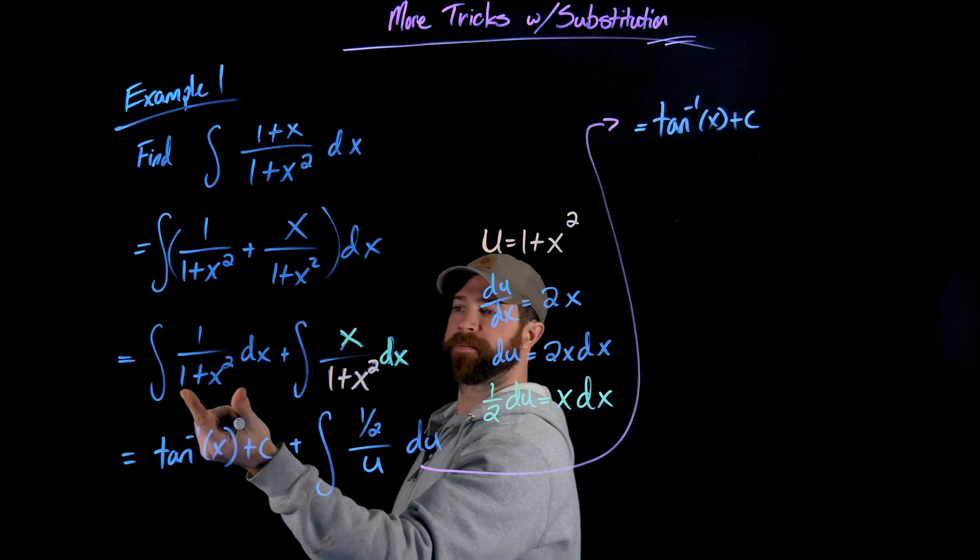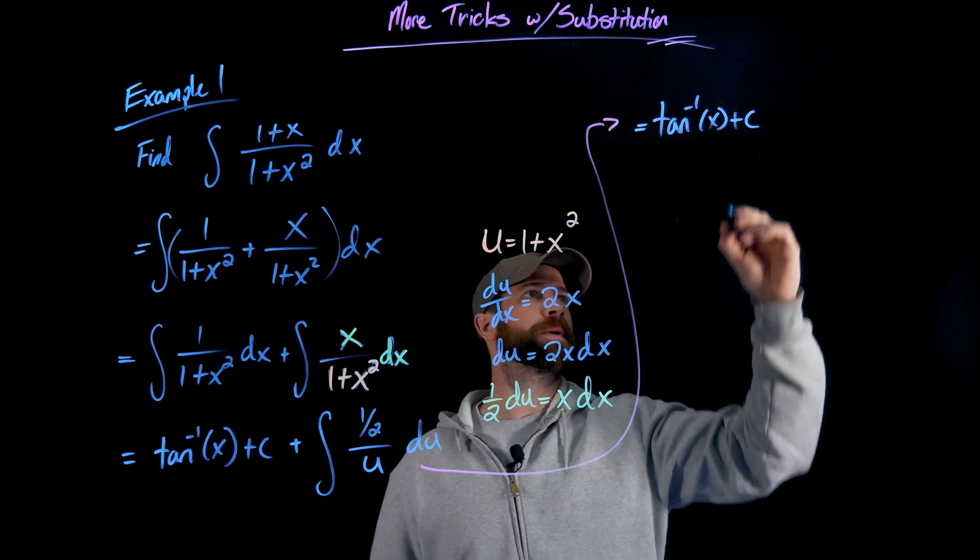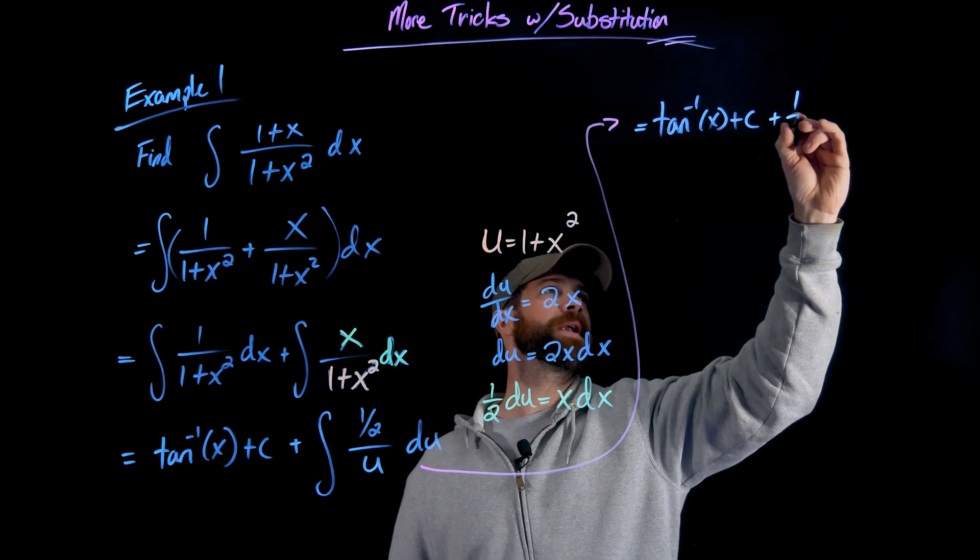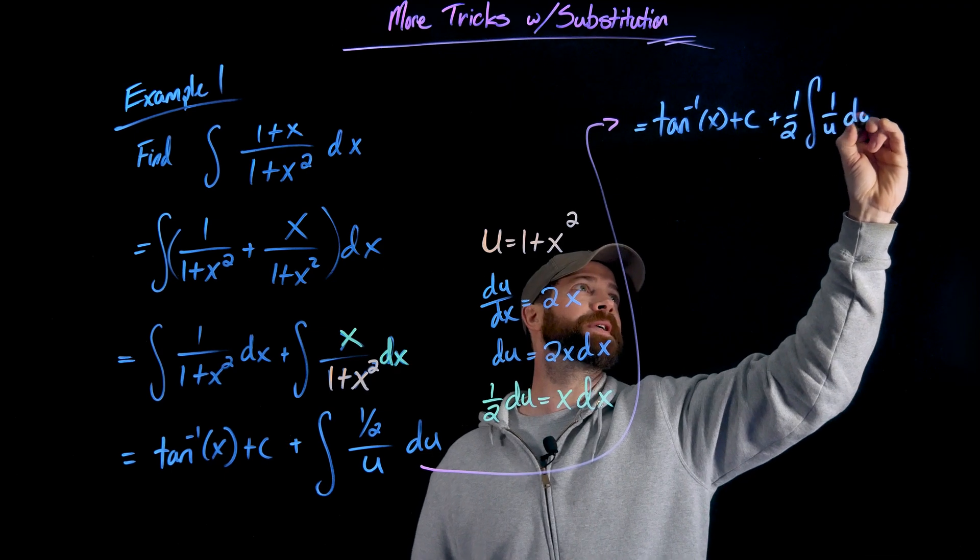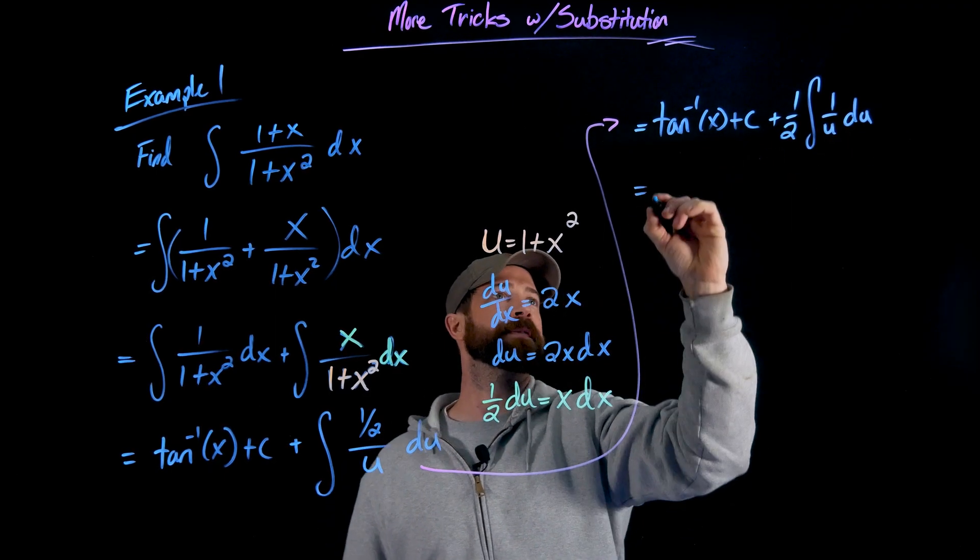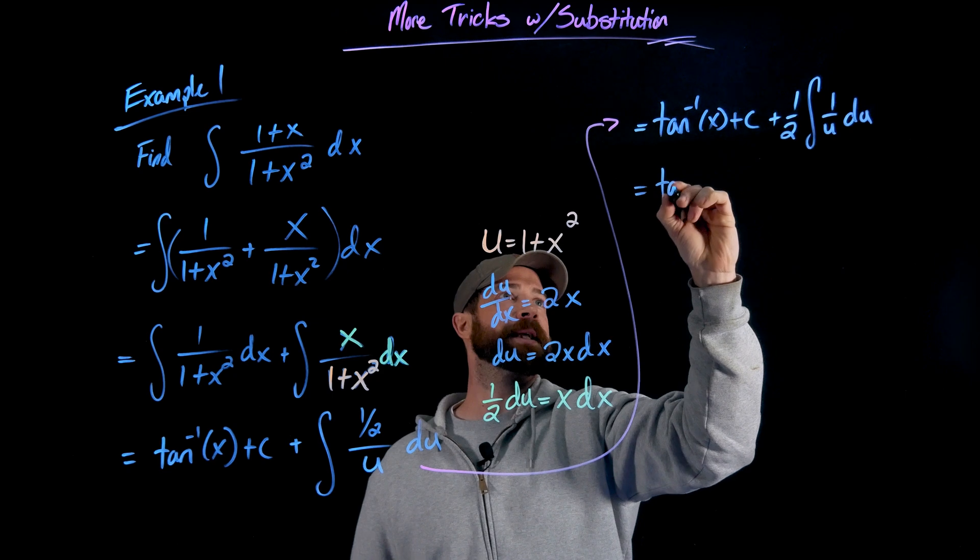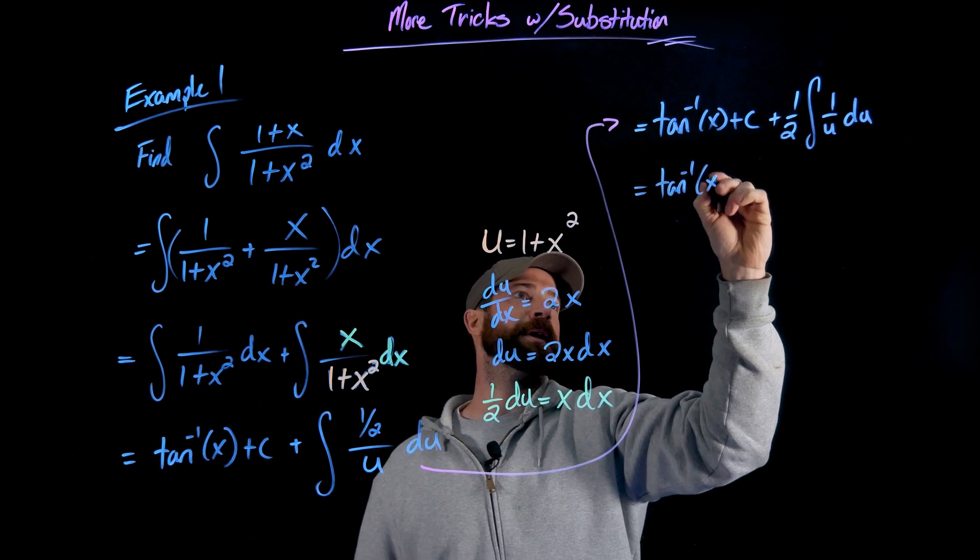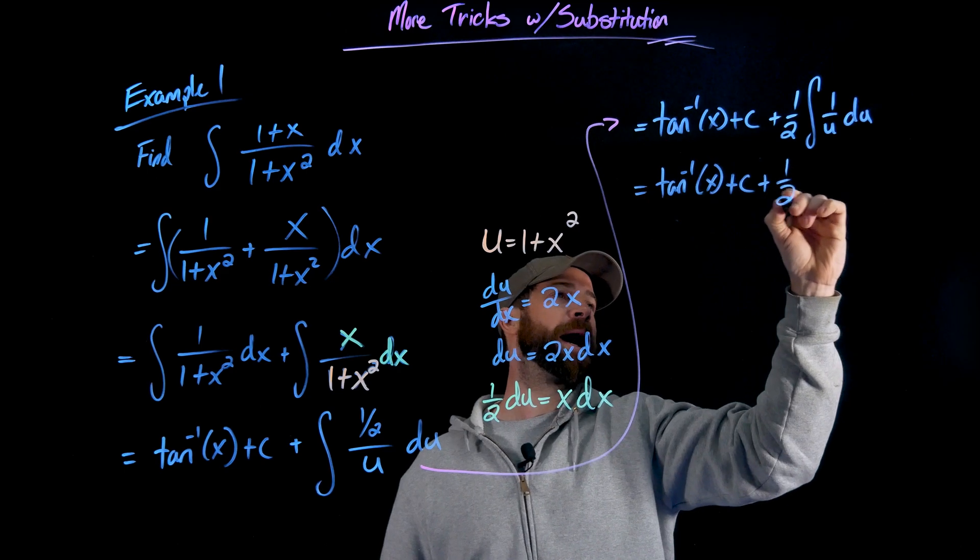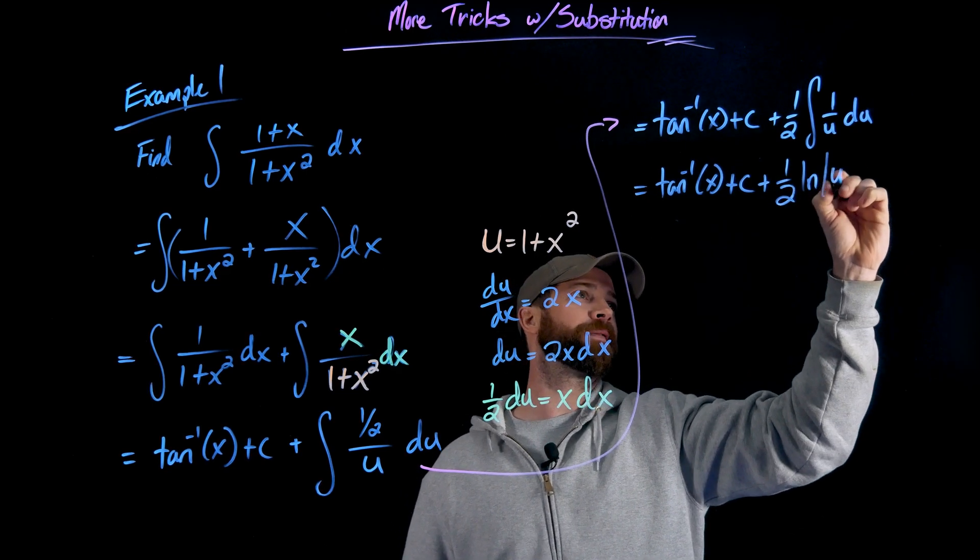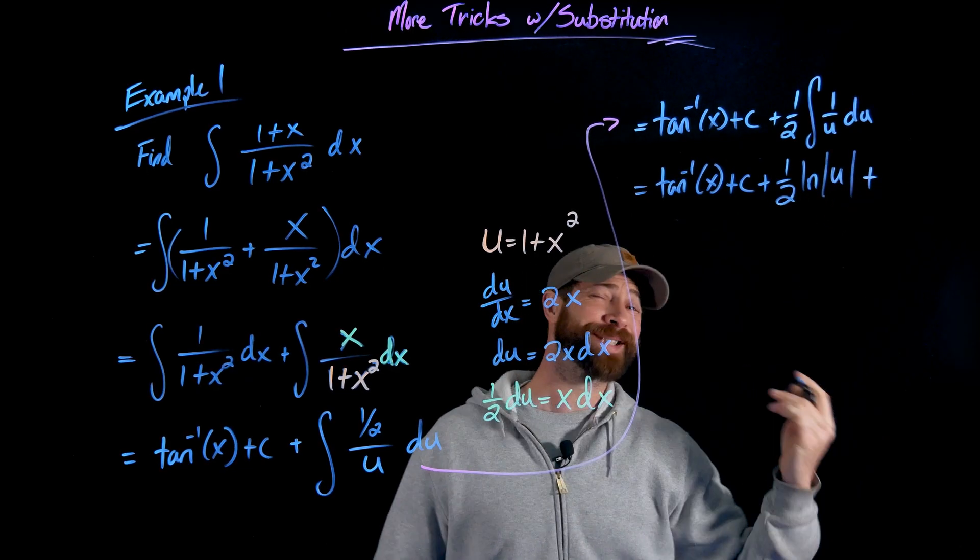So we have the tan inverse of x plus c, that result of that first indefinite integral right there. And now we have 1/2 the integral of 1 over u du. This is just the natural log of the absolute value of u. So we'll get tan inverse of x plus c plus 1/2 the natural log of u plus c.